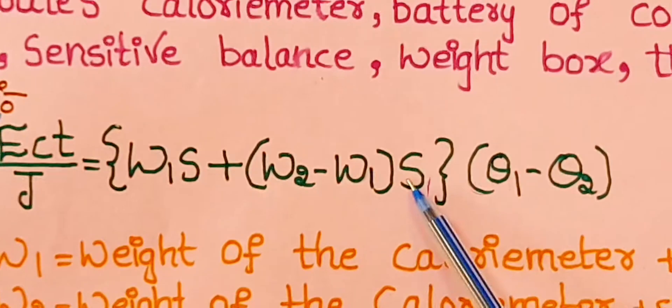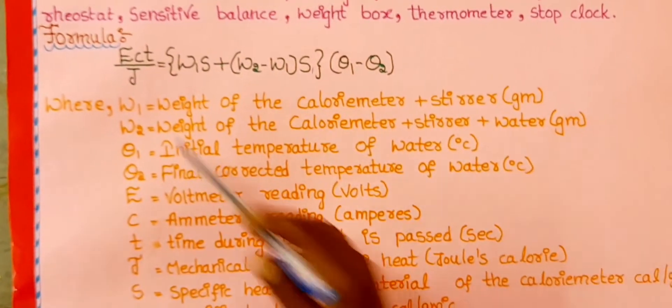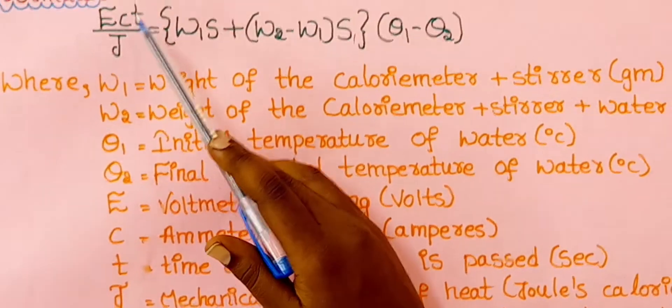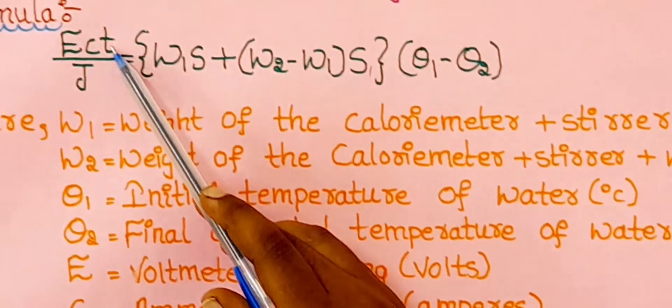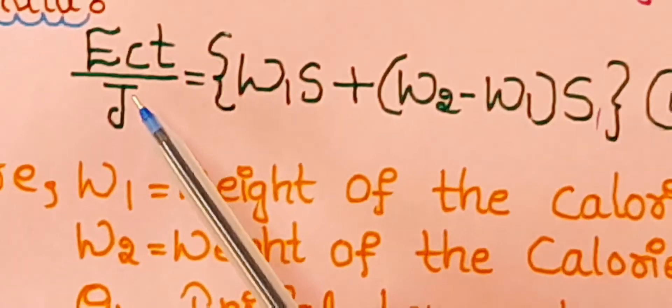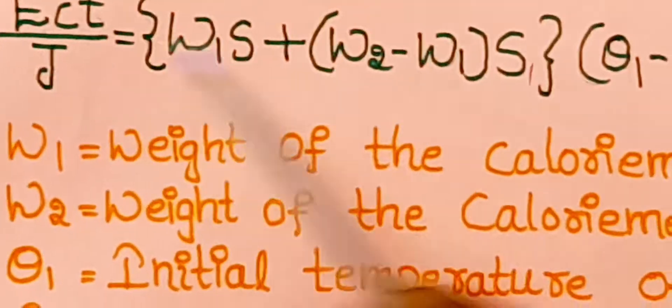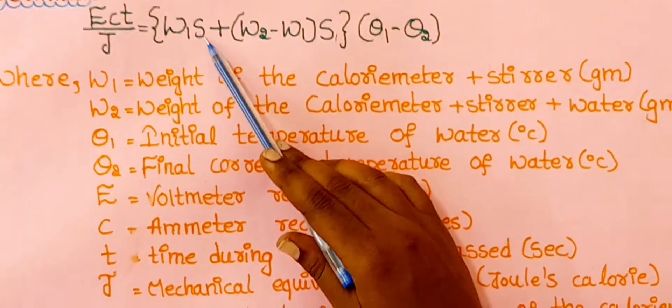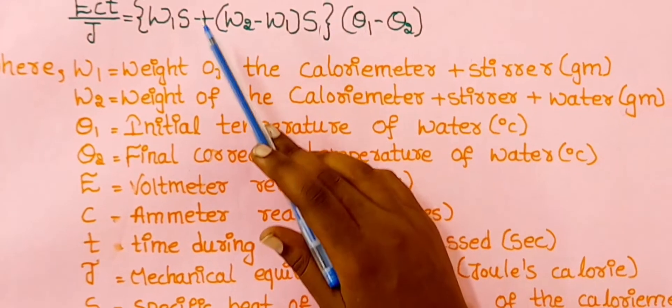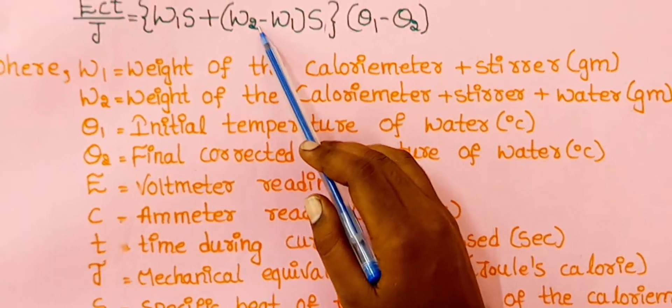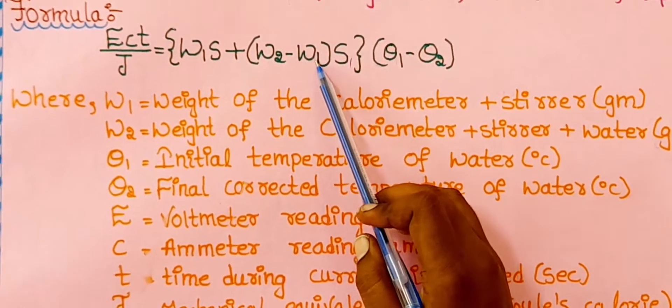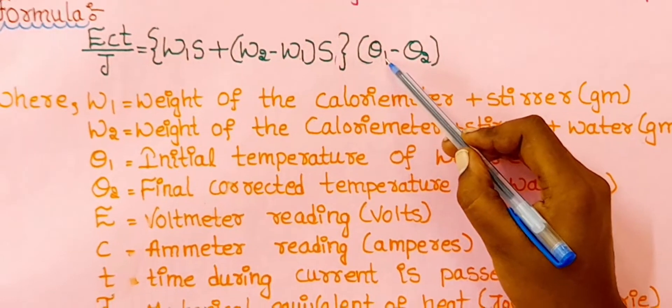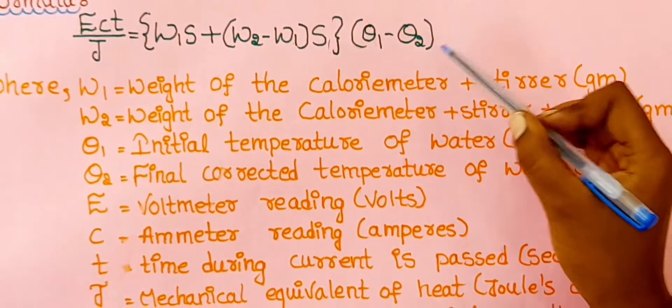This is the formula for Joules calorimeter. V is the voltage we find in voltmeter, I is current in ammeter, T is time taken in seconds, and J is Joules constant 4.2 joules per calorie. W1 is weight of the calorimeter, S is specific heat of calorimeter 0.09, W2 is weight of water. We find the specific heat of liquid. Theta 1 is initial temperature and theta 2 is found with the help of the graph.